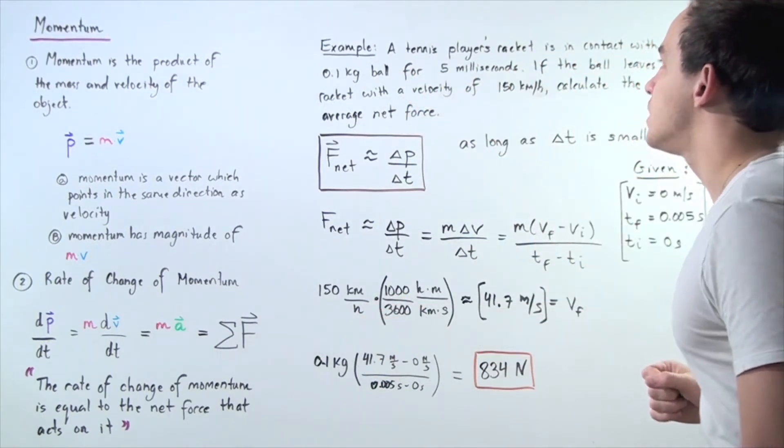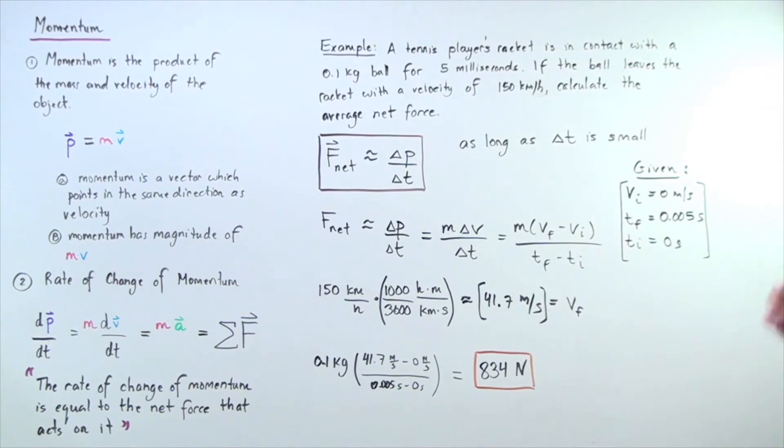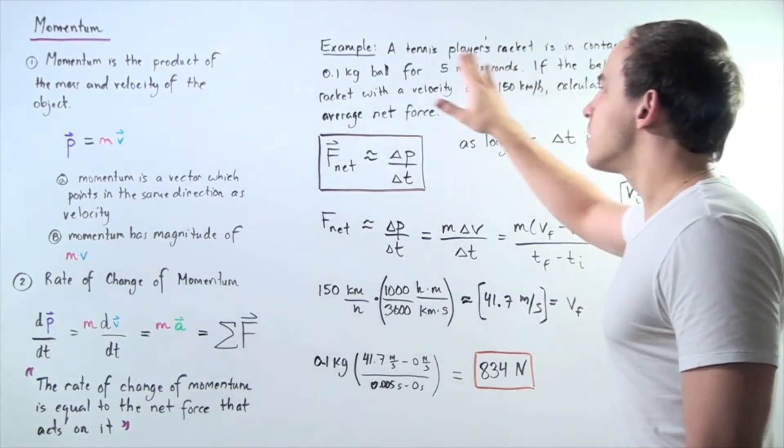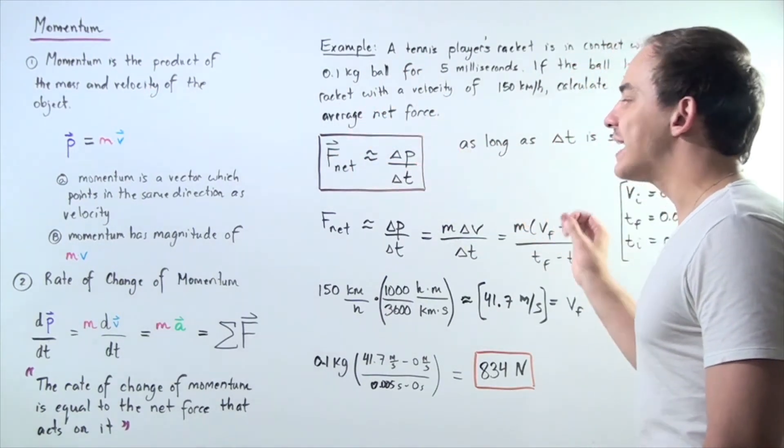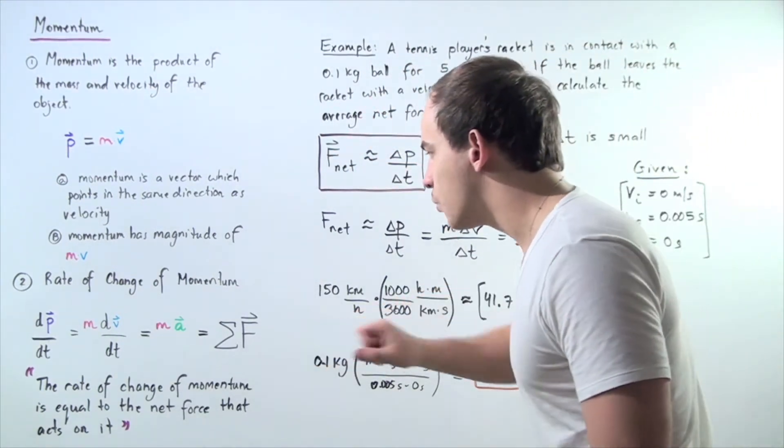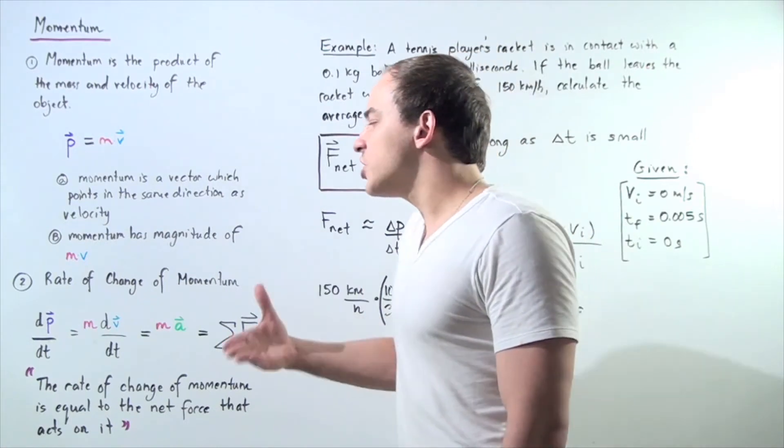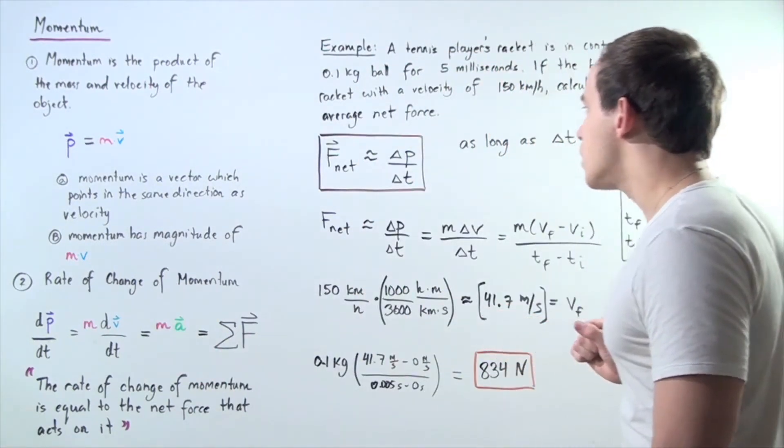Let's suppose that a tennis player's racket is in contact with the 0.1 kilogram tennis ball for 5 milliseconds. If the ball leaves the racket with a velocity of 150 kilometers an hour, let's calculate the average net force acting on the ball using this equation. Note we're going to approximate in this example.